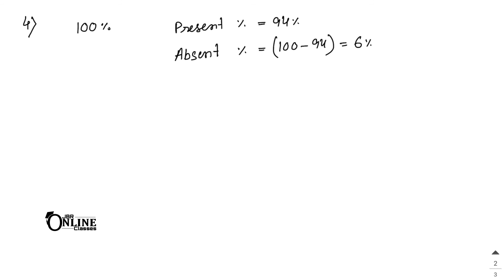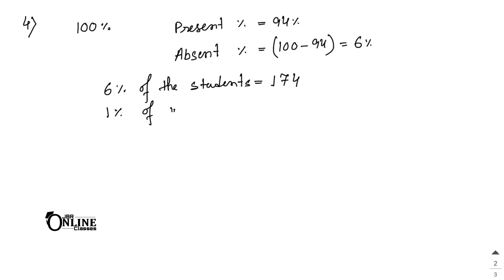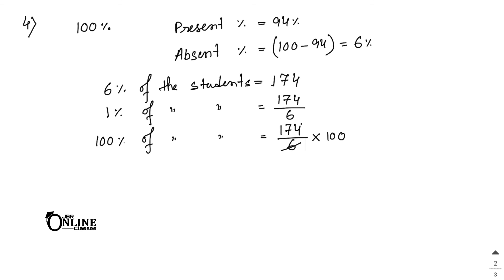If the number of students absent that day is 174, find the total strength of the school. 6% of students = 174, so 1% = 174/6. Therefore 100% = (174/6) × 100. Dividing 174 by 6 = 29, so total = 29 × 100 = 2900 students. That is your final answer.